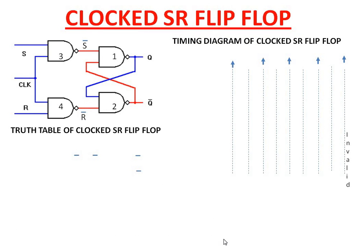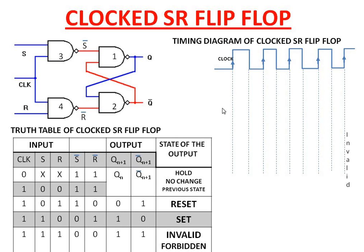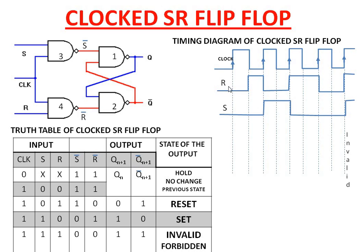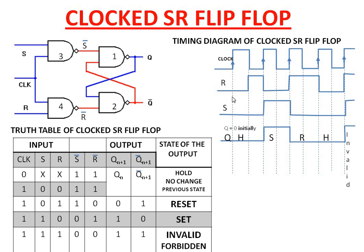This is the timing diagram of a clocked SR flip-flop. The arrow mark shows that this is a PGT flip-flop, meaning the clock is making a transition from 0 to high. When making a transition from 0 to high, this is called PGT. Whereas if it is making a transition from 1 to 0, this is called NGT — negative edge triggered. This example timing diagram is for PGT. The arbitrary inputs of R and S are shown here, and according to these inputs, the output will be changed.